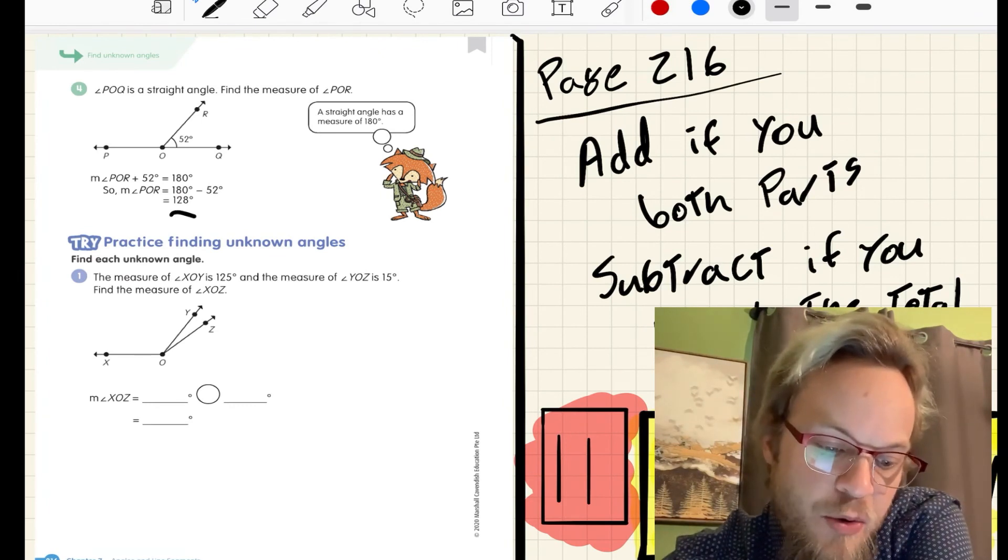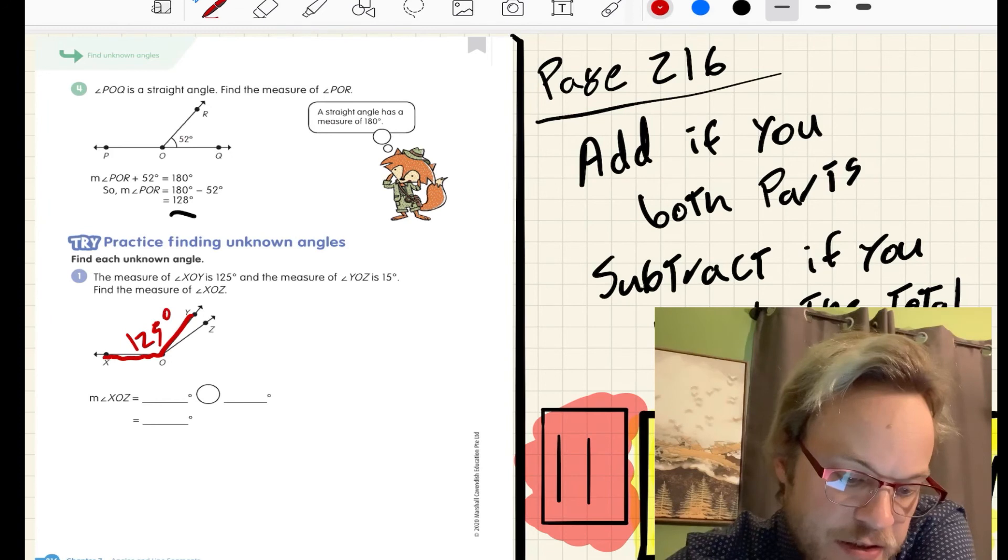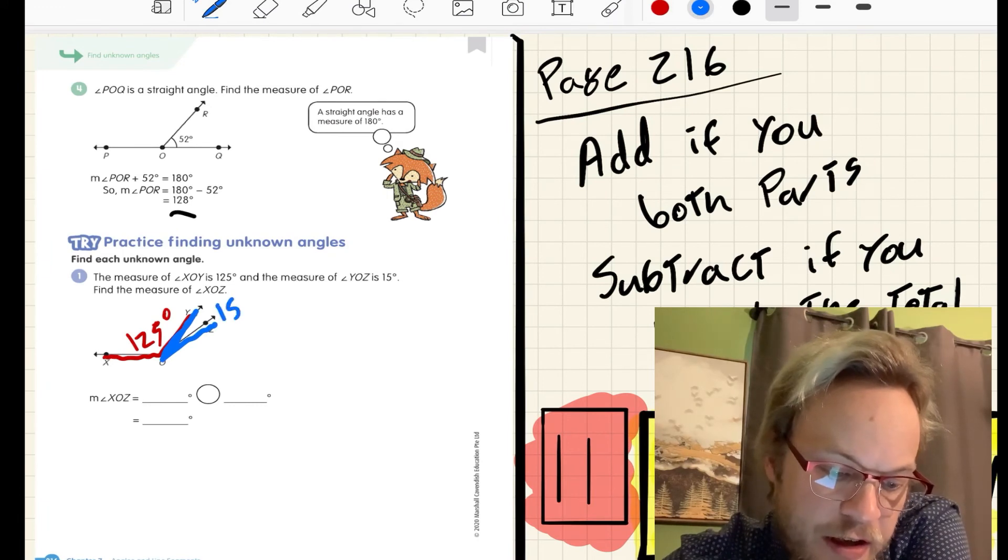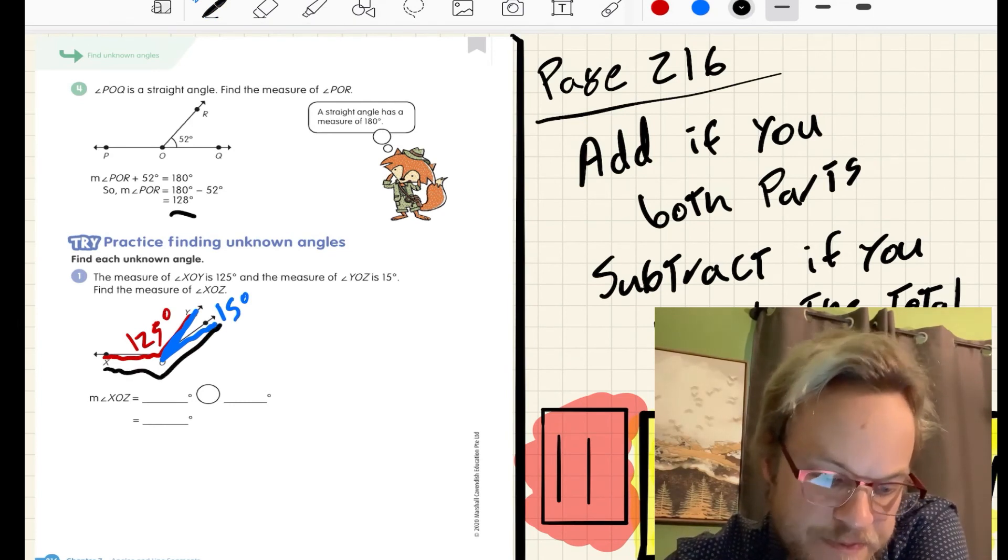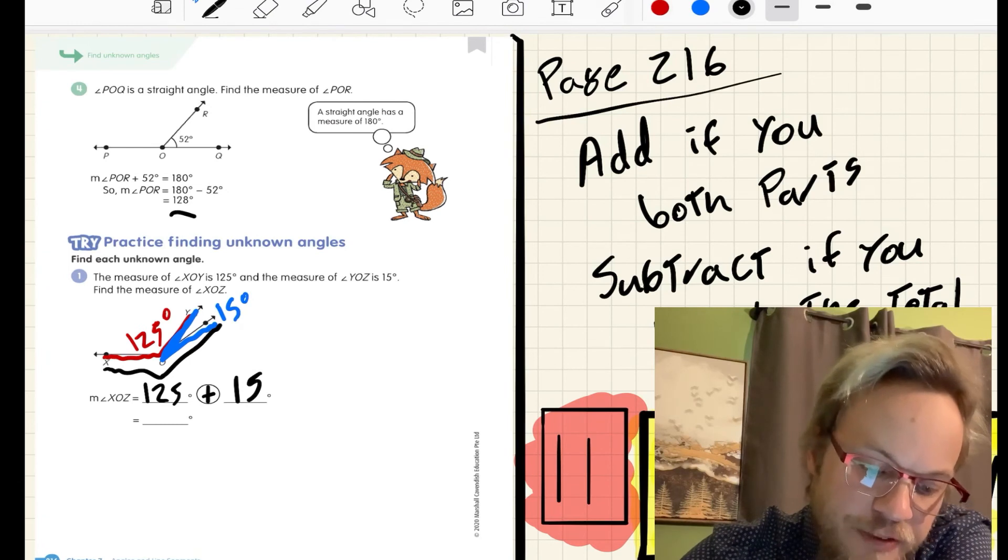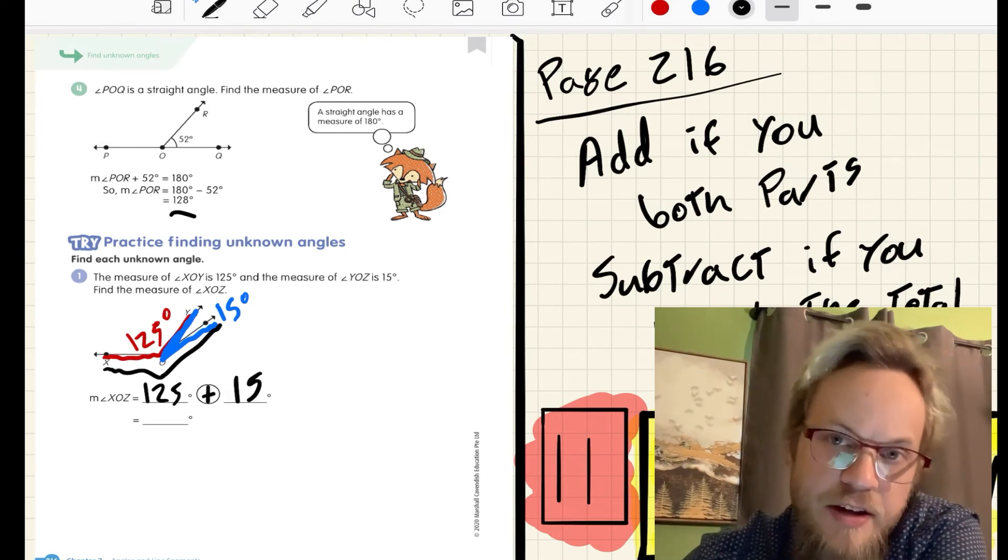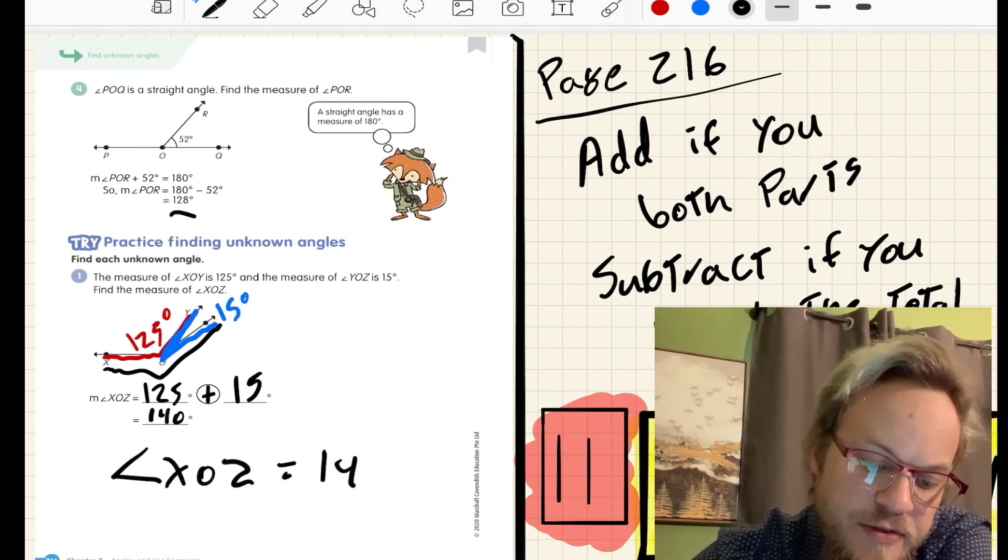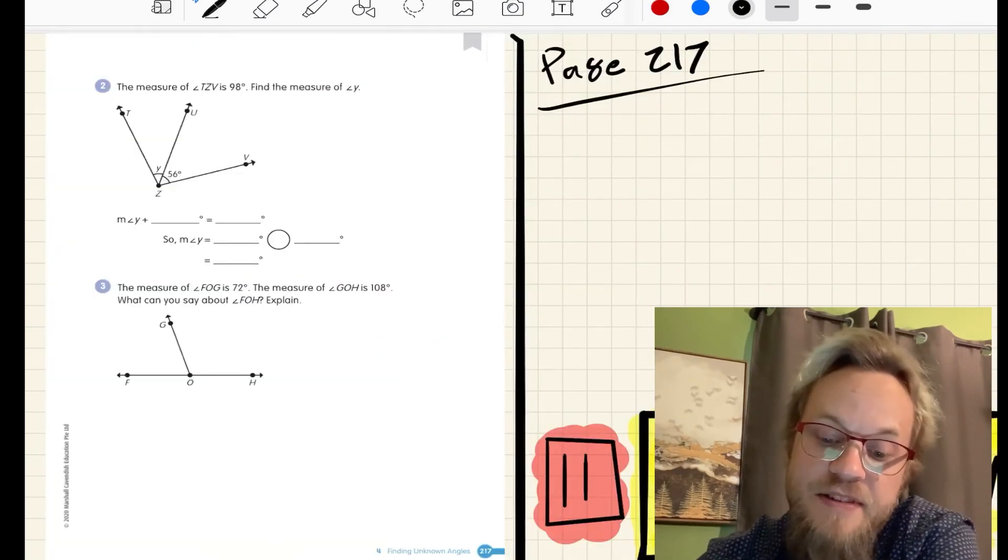You have XOY, which is this obtuse angle of 125 degrees. YOZ, its adjacent counterpart here, is another 15 degrees. Now we need to find the total measure of XOZ. XOZ would be 125 degrees plus 15 degrees. We know both parts, and we just need to figure out what our total is. 125 plus 15 would be 140 degrees. XOZ equals 140 degrees.